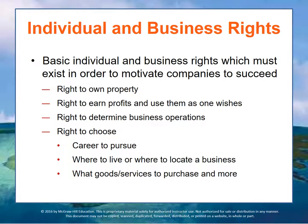Individuals and businesses must be able to make their own decisions about how to use their resources and how their business should operate. Although there is government regulation, the philosophy in countries like the United States and Australia is to minimize regulation and maximize individual freedom within a set of rules of fairness that society agrees are necessary to hold its social fabric together. Number four: individuals must have the right to choose the career they want, where they want to live, and what goods and services to purchase.